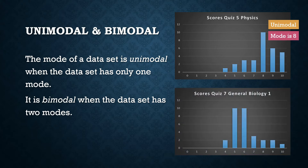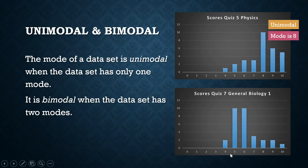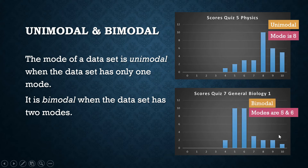Now consider the result of a quiz in general biology 1. There is only one student who got a score of 10. There are two students who got scores of 9 and 8. Three students got a score of 7, two got a score of 4. But there are 10 students who got a score of 5 and another 10 who got a score of 6. So we have two modes: 5 and 6. This is an example of a bimodal data set.